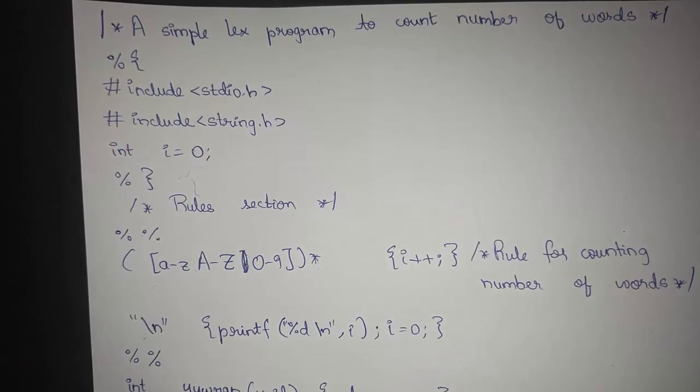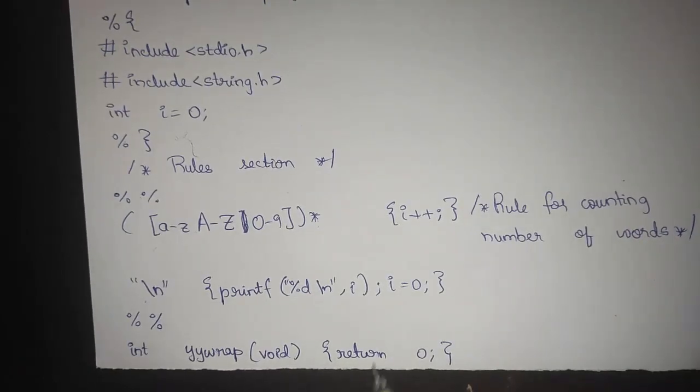We use int yywrap void return zero. yywrap is used to be called from yylex in the main function in order to perform the particular auxiliary functions or the translation rules.